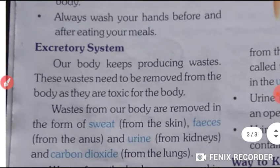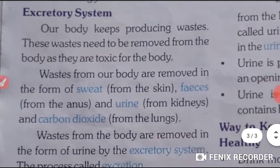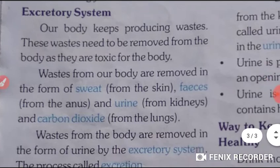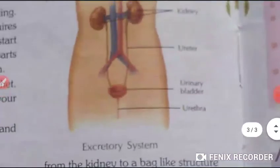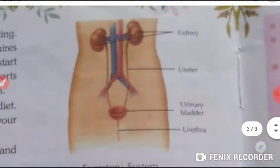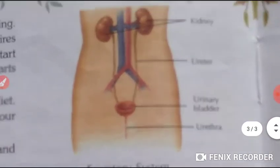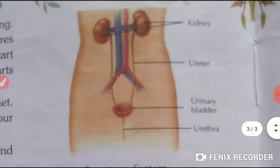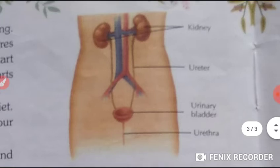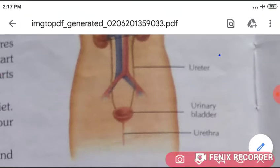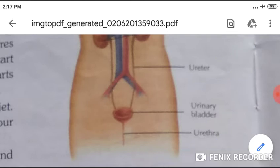You should include a lot of fiber in your diet and always wash your hands before and after eating your meals. Now students, we will talk about our excretory system. This is the diagram of our excretory system — kidneys, ureter, urinary bladder, and urethra are seen here.